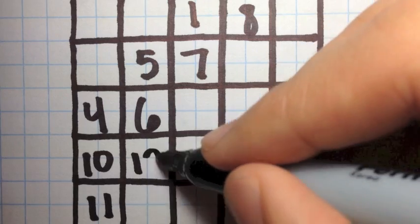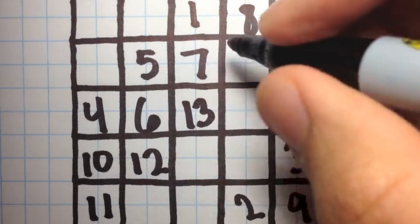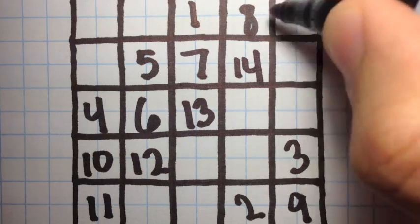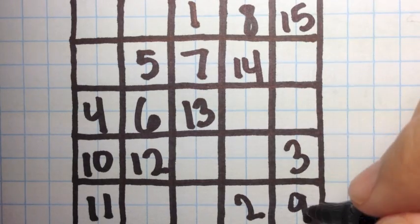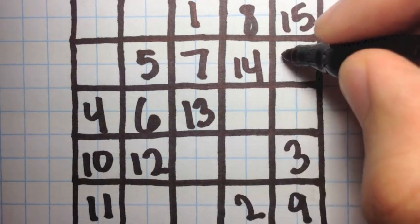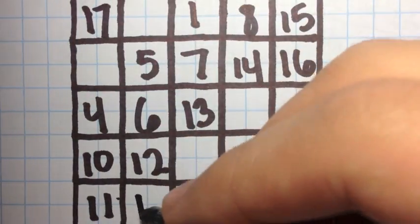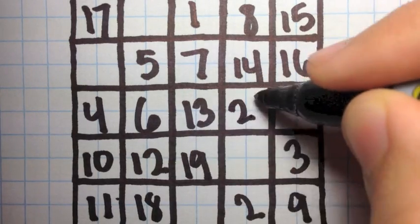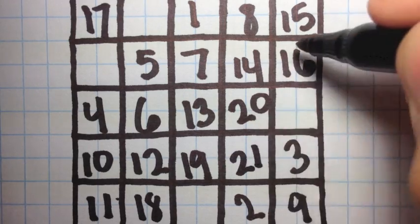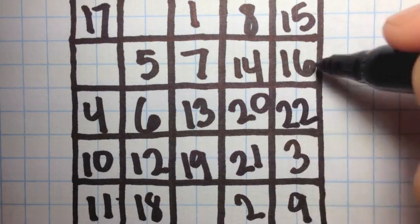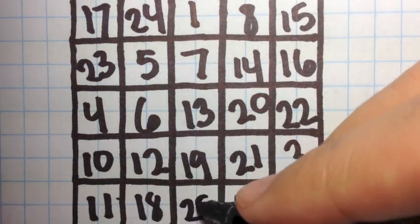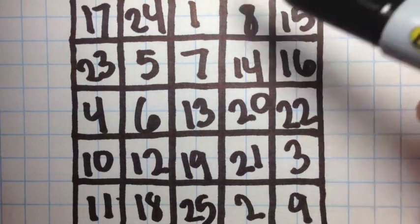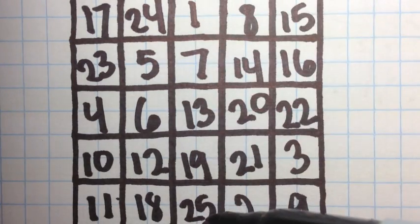Up one, to the right one. Up one, to the right one. Up one, to the right one. Up one, to the right one. And now we have our 5x5 magic square, ranging from 1 to 25.